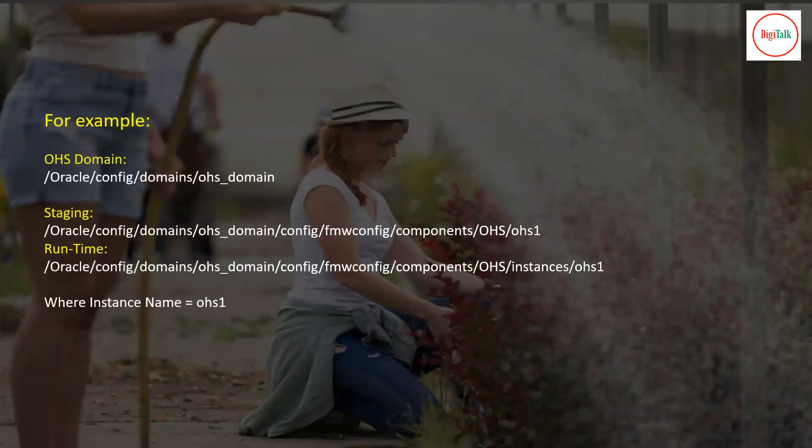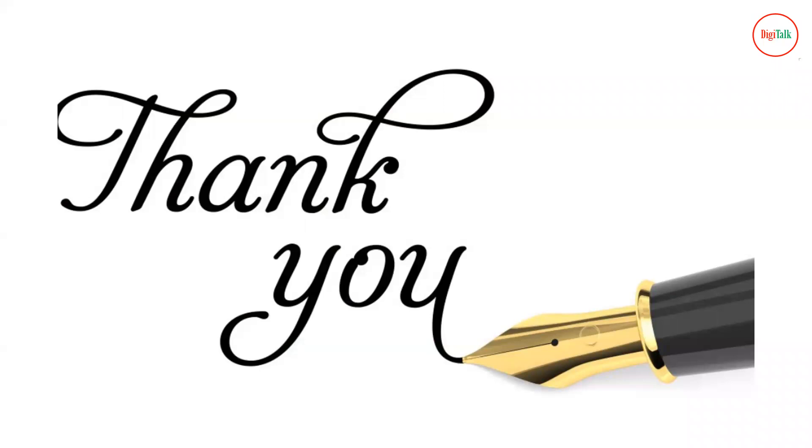For example, if your OHS domain path is oracle_config/domains/OHS_domain, the staging directory is inside: domain/config/fmwconfig/components/OHS/<instance_name>, and the runtime directory is inside: domain/config/fmwconfig/components/OHS/instances/<instance_name> - where OHS1 is the instance name. Always make configuration changes in the staging directory files, never in the runtime directory. Thank you for watching. If you found this useful, please subscribe to the channel.